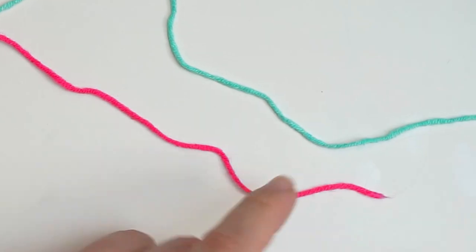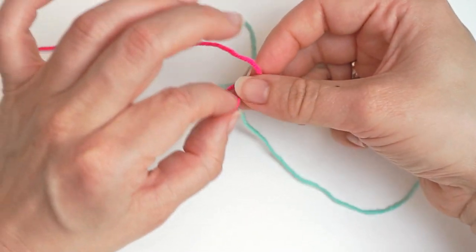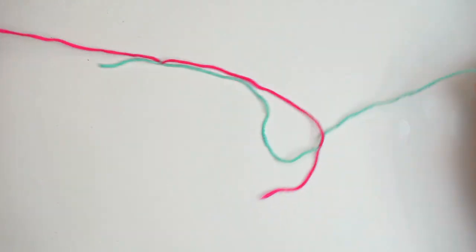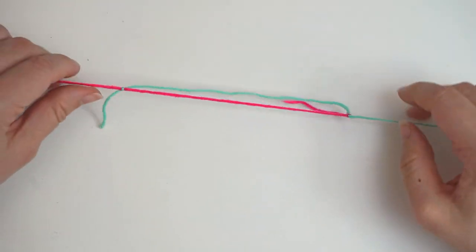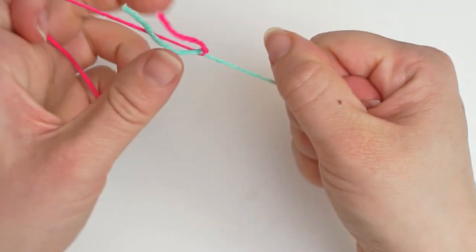Then take the other end and tie a knot to the other color. Just a simple knot. Then take the two ends and pull them together. Pretty tight.